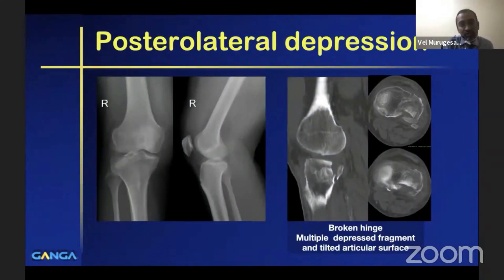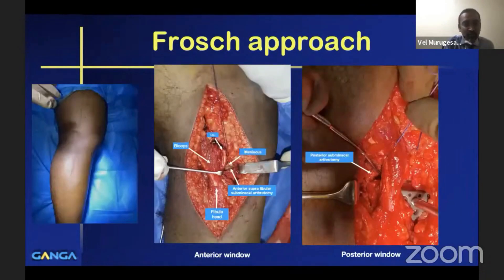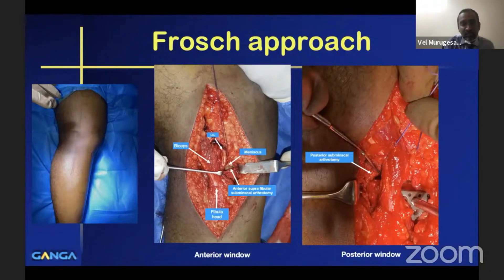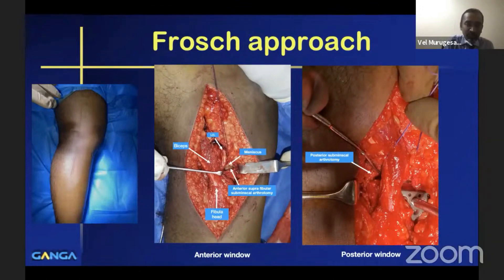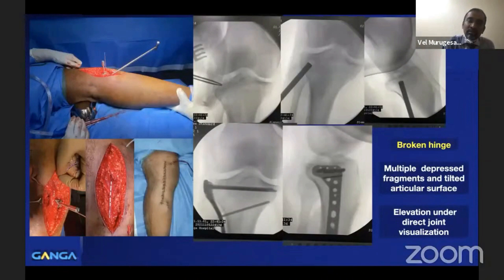When there is a broken hinge with multiple depressed fragments, a tilted articular surface, or the fracture involves the posterior cortical rim, a four-approach technique can be used. The anterior window is anterior to the LCL and biceps tendon, where an anterior suprafibular submeniscal arthrotomy is performed to visualize. A posterior window can also be used for posterior submeniscal arthrotomy. Elevation is done through the lateral cortical window and confirmed through the submeniscal arthrotomy.